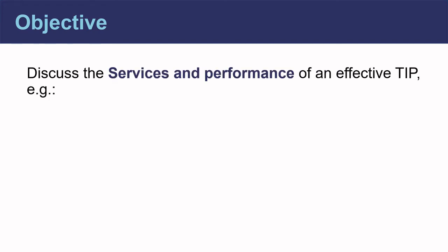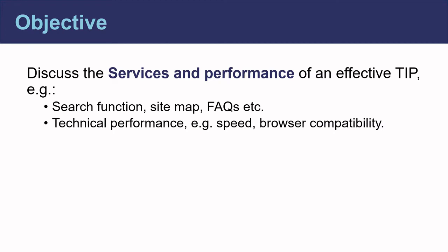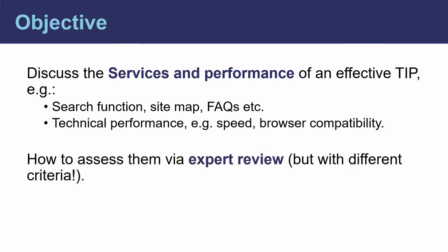In Module 2, we explained that TIP services and performance is one of the seven quality attributes of effective contents. This covers the availability of services like search functions, a sitemap or a frequently asked questions page, as well as the overall technical performance of the TIP, like loading speed.